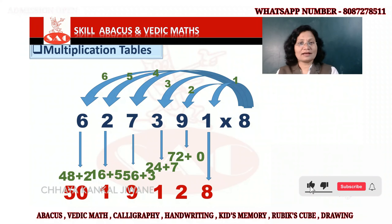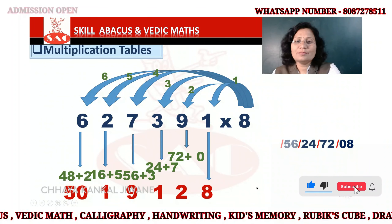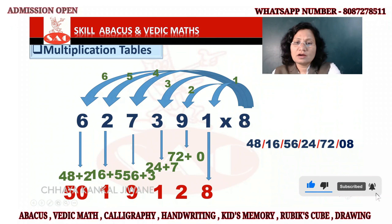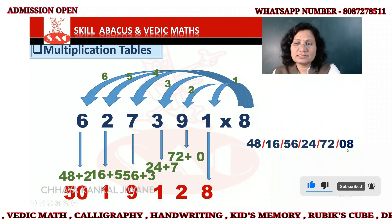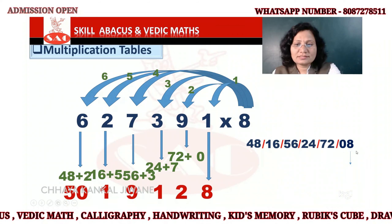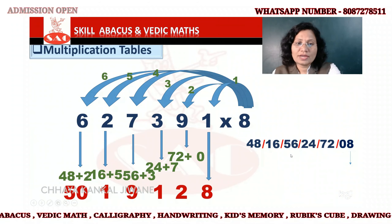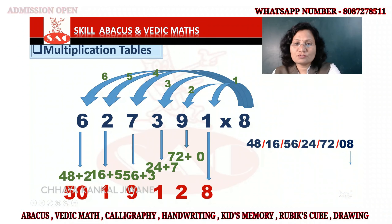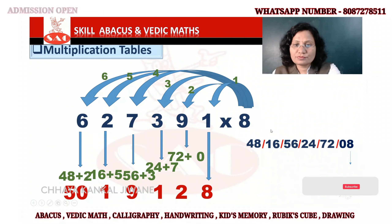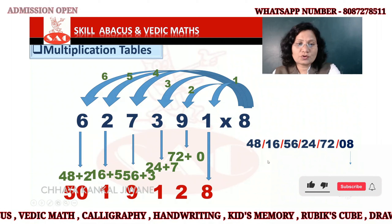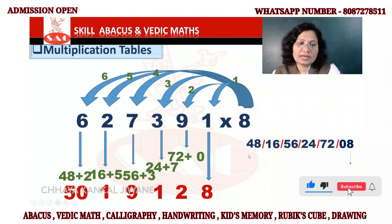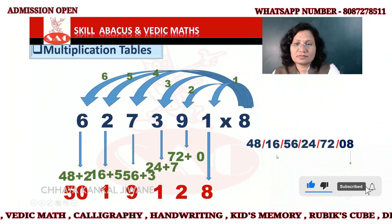Our answer has come. Let's see how we added it: 8 × 1 = 0 8, 8 × 9 = 72, 8 × 3 = 24, 8 × 7 = 56, 8 × 2 = 16, and 8 × 4 = 48. We just need to add these simply.